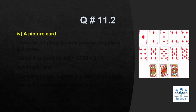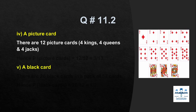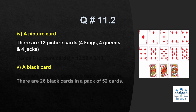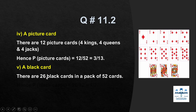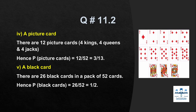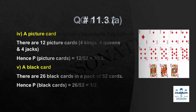For a picture card: there are 3 picture cards per suit (J, Q, K), giving 12 picture cards total. For black cards: there are 26 black cards in the pack, so P(black card) = 26/52 = 1/2.